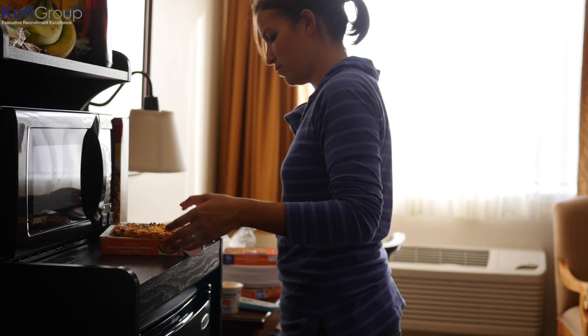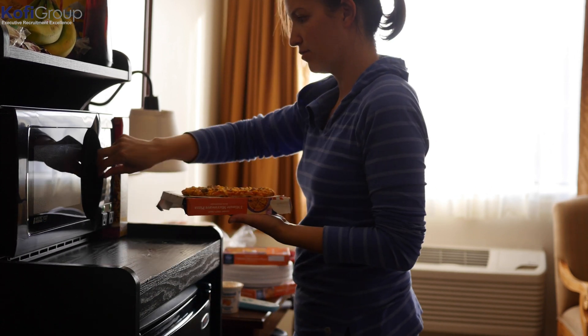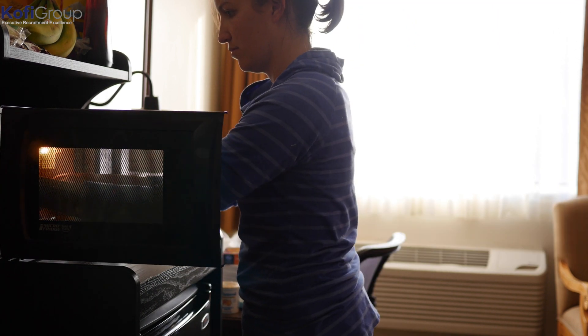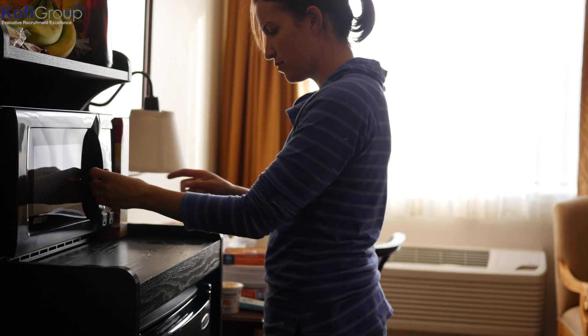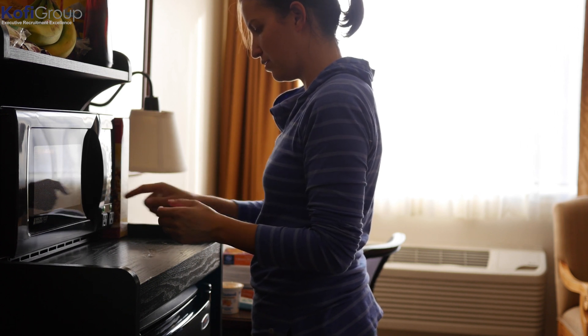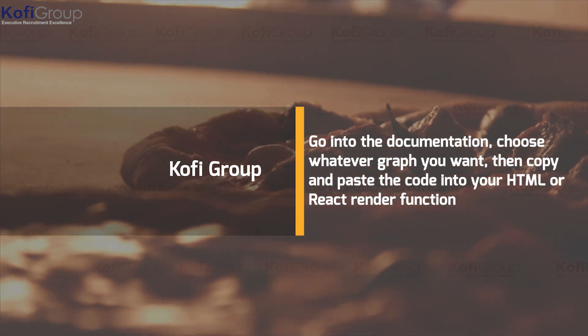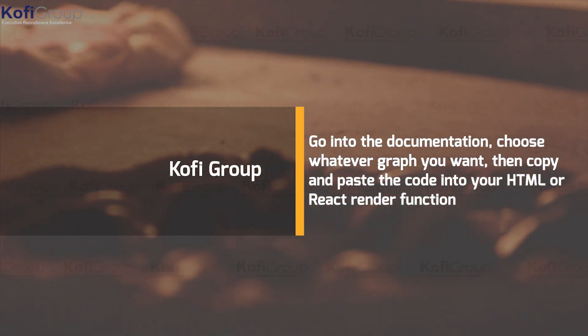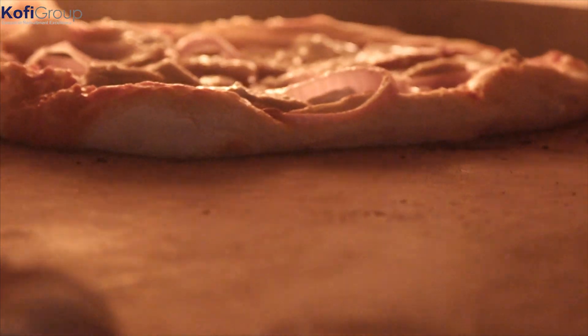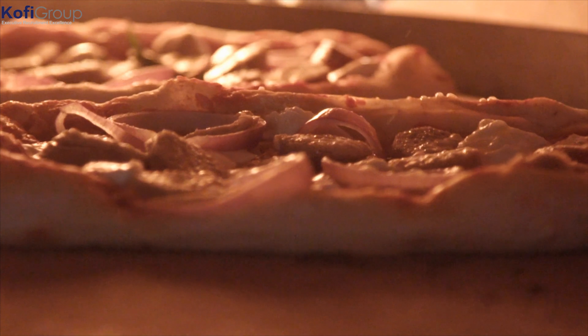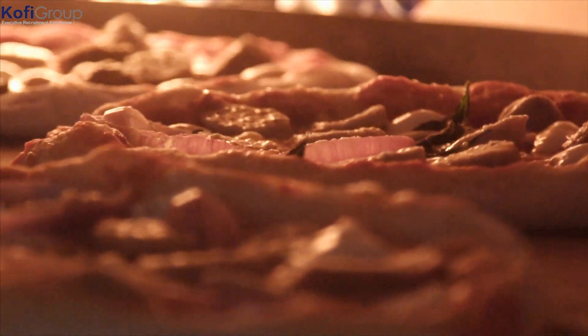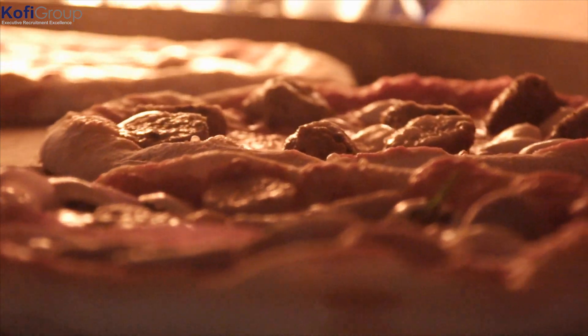Back to our pizza data visualization analogy: with Chart.js it's just a matter of picking your preference out of the frozen food aisle of your local supermarket, driving home, and microwaving for five minutes — or if you're feeling fancy, trawling through your local pizzeria's menu and having your pizza delivered to your door. When it comes to Chart.js, all you have to do is go into the documentation, choose whatever graph you want, then copy and paste the code into your HTML or React render function, input the data into the given fields, and you're good to go. Visualization fast food.